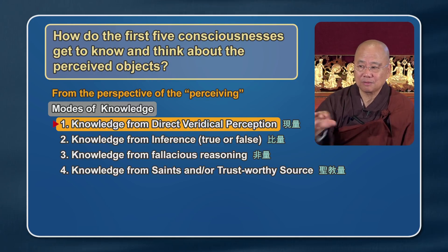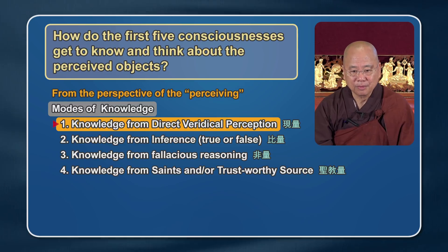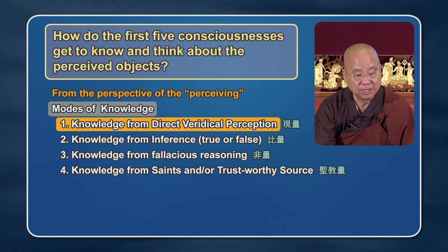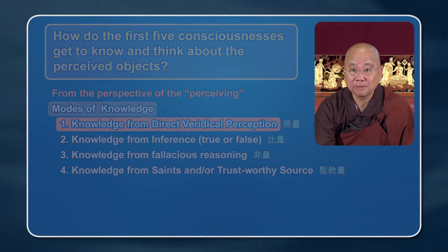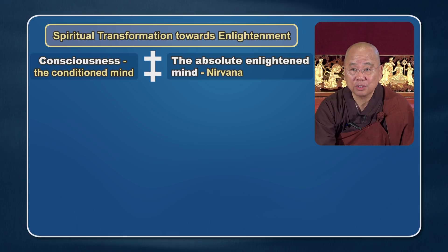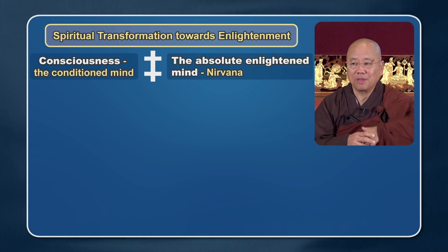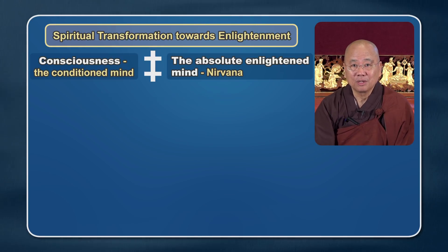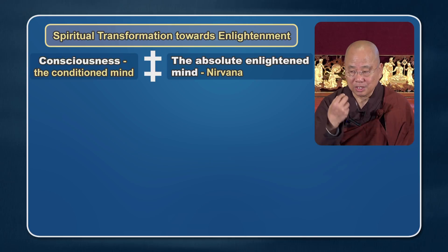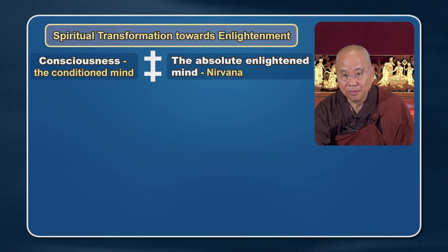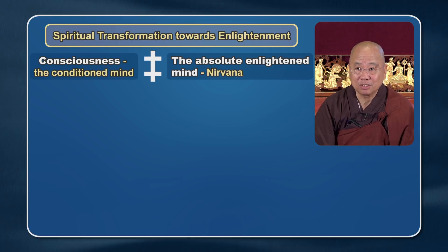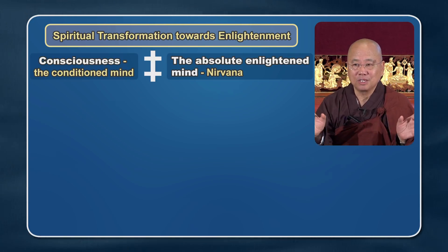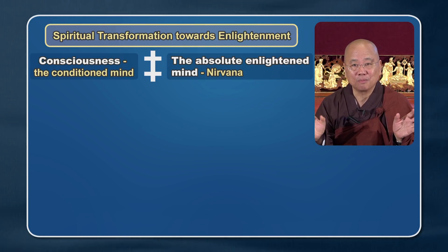The next perspective we look at is how do we transform the first five consciousnesses into enlightenment — spiritual transformation towards enlightenment. To talk about that, we need to go back a little bit. Our consciousness is the conditioned mind, and the absolute enlightened mind is nirvana — the nirvanic mind. That's the absolute enlightened mind.